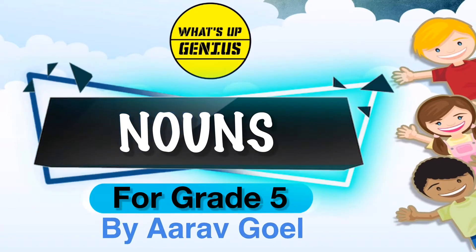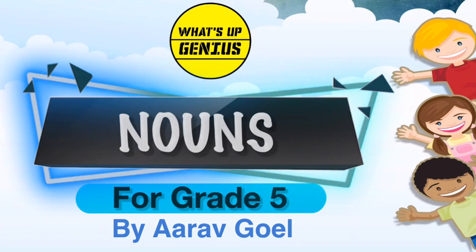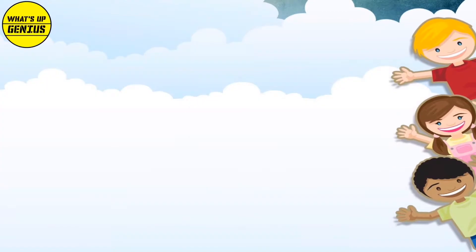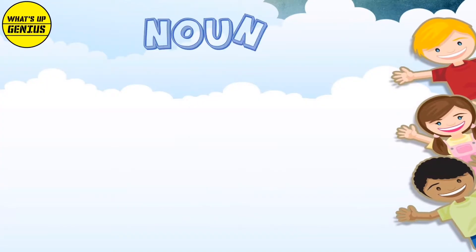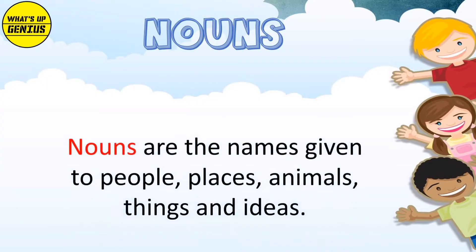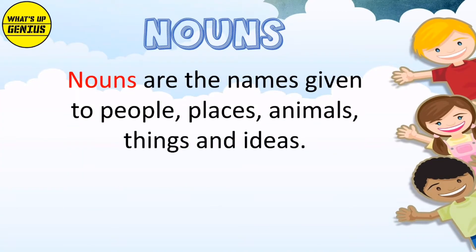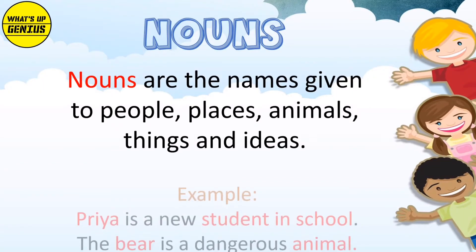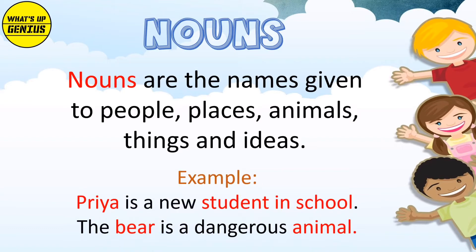Nouns for Grade 5. Nouns are the names given to people, places, animals, things and ideas. Example: Priya is a new student in school. The bear is a dangerous animal.